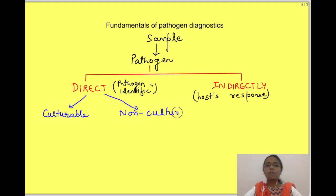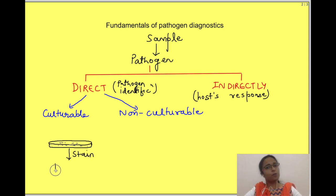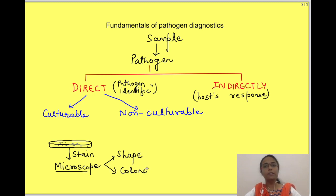The choice of direct method depends on whether the pathogen can be cultured, i.e., whether it can be grown in a suitable environment. For culturable pathogens, we put the obtained sample in a suitable growth medium and wait for the pathogen to grow. Then we can stain it and observe it under the microscope. Culture and staining is well established for bacteria, where various culture media and stains like Gram stain, Ziehl-Neelsen stain, etc., are available. That is why we need to know the shape of the pathogens or the shape of the colonies they form.